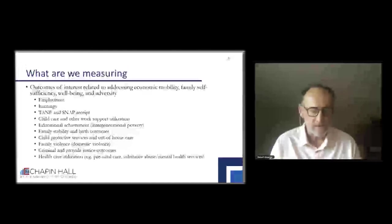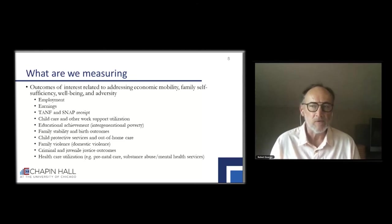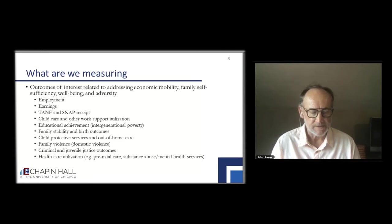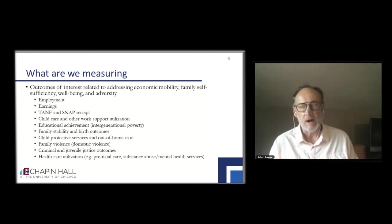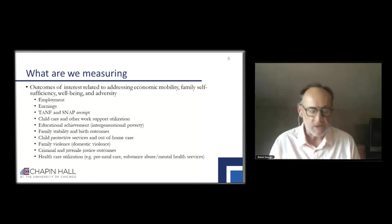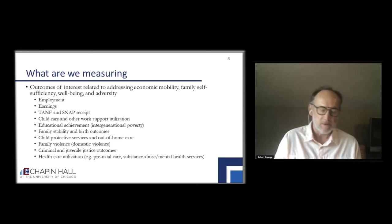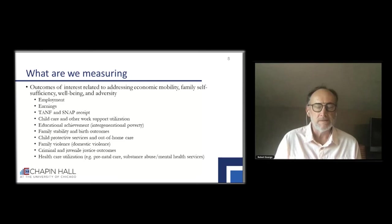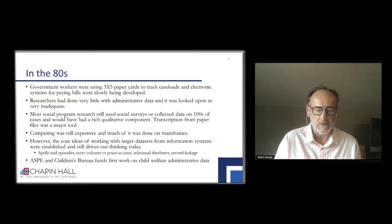Childcare and work support utilization is important to understand. Educational achievement is a way to reduce intergenerational poverty. Family stability and birth outcomes also impact economic mobility. And then there are more severe, serious issues such as child maltreatment, domestic violence, criminal justice, and health care needs that impact us. So these are all topics that are important for economic mobility and data we have to bring together for a comprehensive understanding.